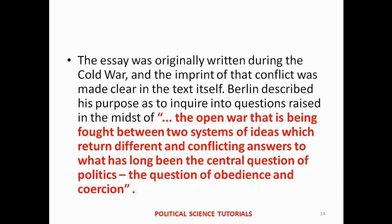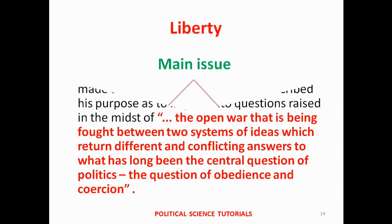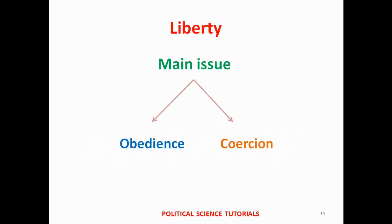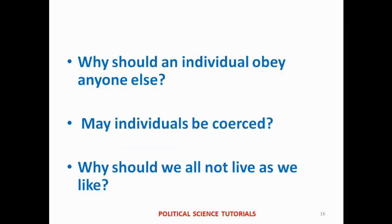The conflicts arising from these two systems of ideas created confusion. The questions were about two main areas: the area of obedience and the area of coercion. Berlin's concept of liberty is based on answers to questions like: why should an individual obey anyone else, may individuals be coerced, and why should we not all live as we like?